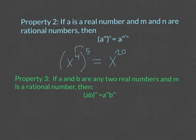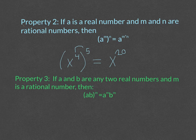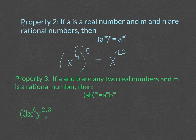The next property is very similar to property two. It says if a and b are any two real numbers and m is a rational number, then a times b to the m power is equal to a to the m times b to the n. Which means you distribute the power. So let's combine the two rules here on one specific problem.